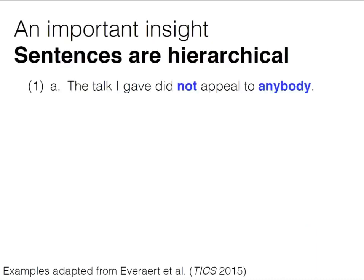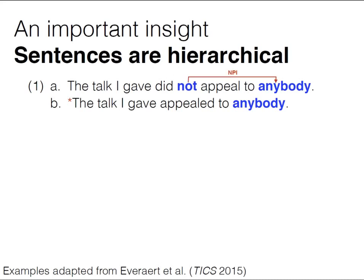I'm going to start with a motivating example. Imagine you're a learner confronted with this sentence: 'The talk I gave did not appeal to anybody.' You're also given the information that 'The talk I gave appealed to anybody' is ungrammatical — that's what the star means. We might hypothesize there's a relationship between 'not' and 'anybody' — 'not' is basically licensing 'anybody'. This is called a negative polarity item licensor. The negative element 'not' licenses 'anybody'; it could be 'hardly', 'no', or similar.